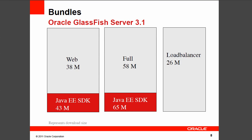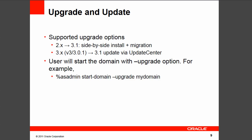Oracle GlassFish Server has two major distributions. The web profile is about 38 megabytes and the full platform is 48 megabytes. A new distribution for the load balancer plugin was introduced at 26 megabytes. For those interested in the Java EE SDK, the web profile distribution is 43 megabytes and full platform is 65 megabytes. GlassFish 3.1 offers comprehensive upgrade support from previous versions. Existing 2.x users may install 3.1 side-by-side and upgrade the configuration, while 3.x users may do so in-place using Update Center.